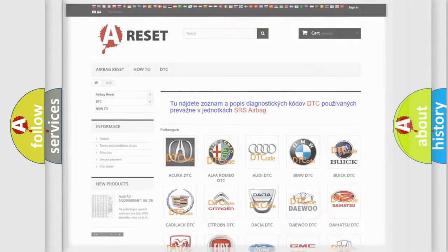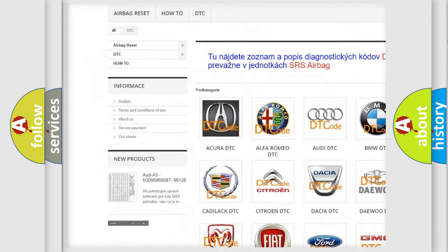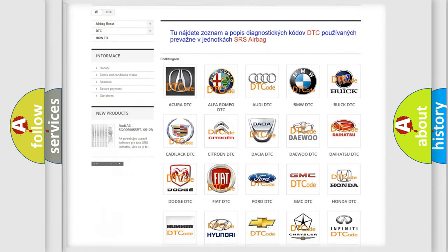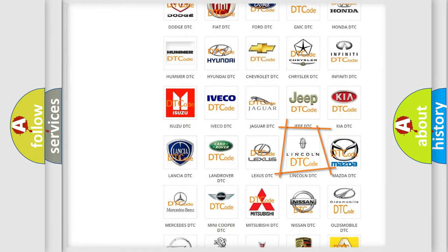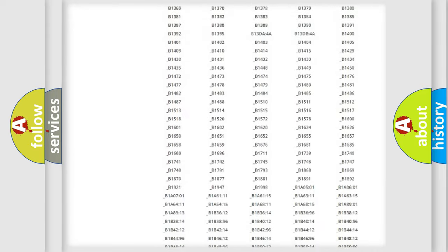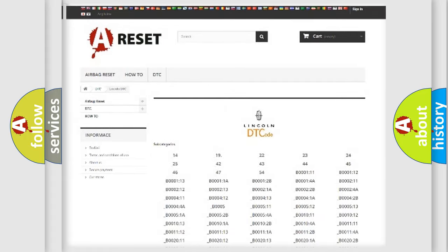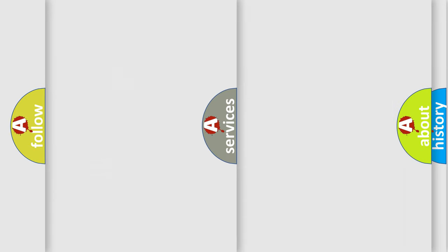Our website airbagreset.sk produces useful videos for you. You do not have to go through the OBD2 protocol anymore to know how to troubleshoot any car breakdown. You will find all the diagnostic codes that can be diagnosed in a link and vehicles. Also many other useful things.